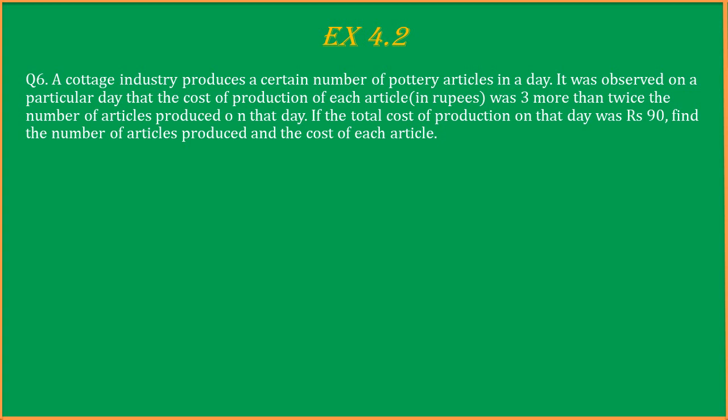So a cottage industry produces a particular number of pottery articles, meaning the cost of production of one article is 3 more than twice the number of articles. The total cost of production on a particular day was given as 90 rupees, so we need to find the number of articles and the cost.